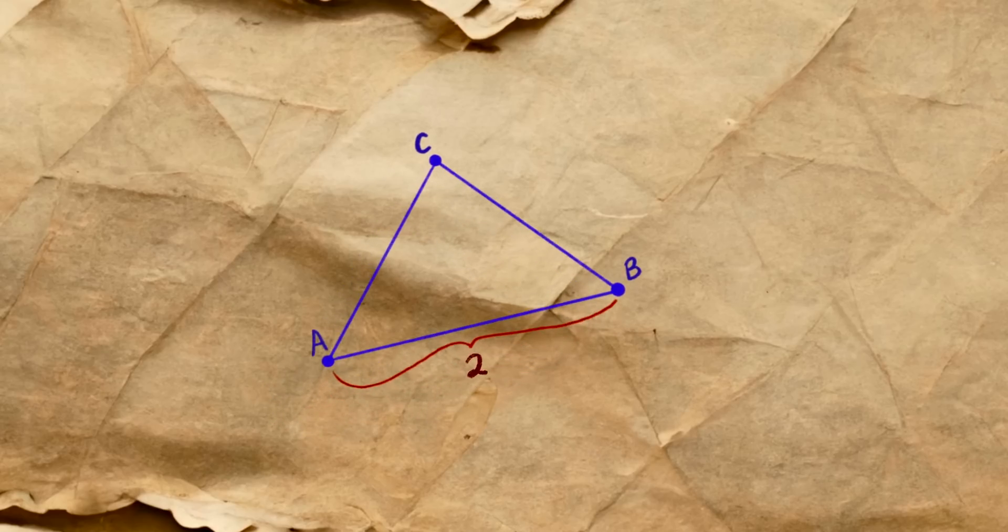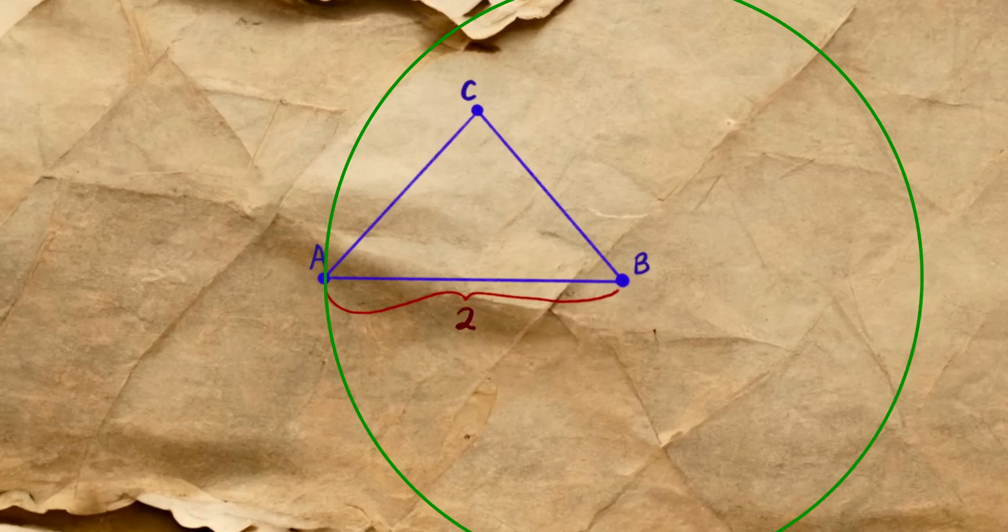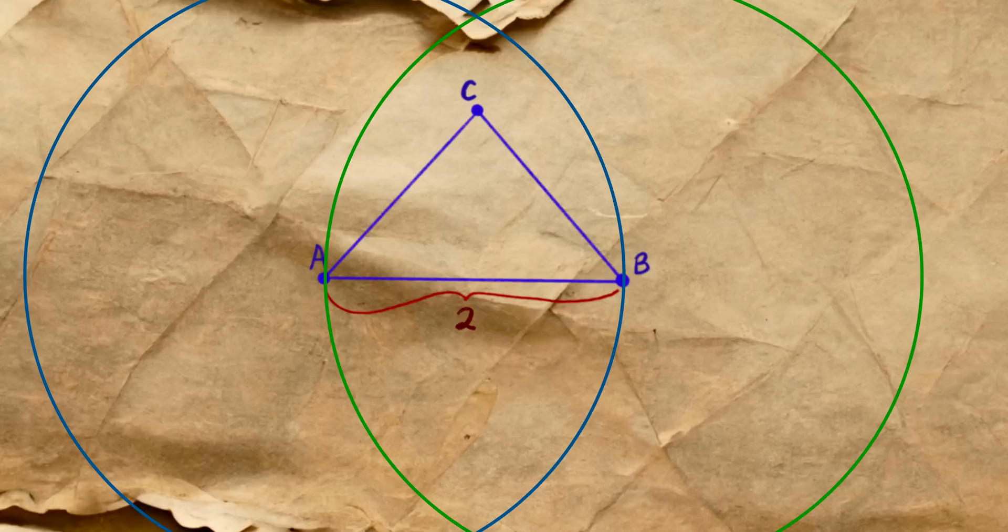Next up, we'll put two circles into the situation. We'll put a circle centered at A with radius 2 and another circle centered at B with radius 2. Notice that C must lie in the intersection of these circles, and that's because the intersection of these circles is exactly all of the points that will make AC and BC less than AB. Let's recall that AB was supposed to be the longest side of our triangle.